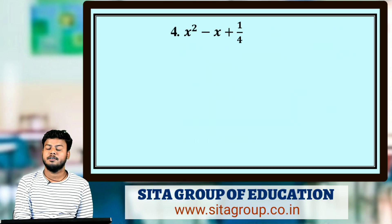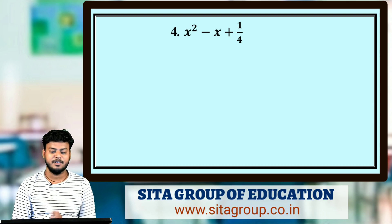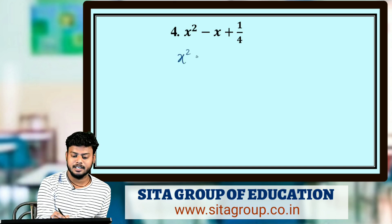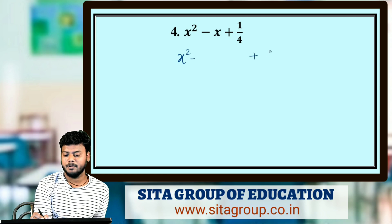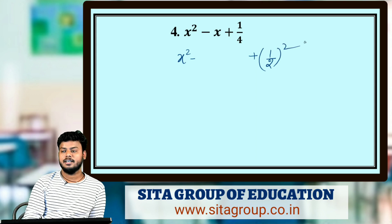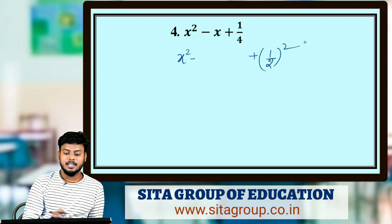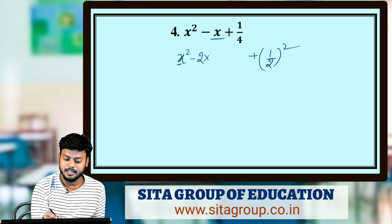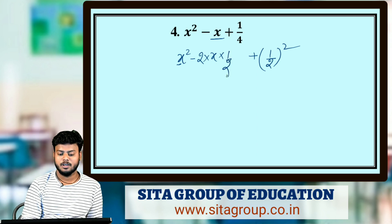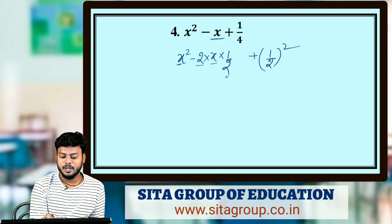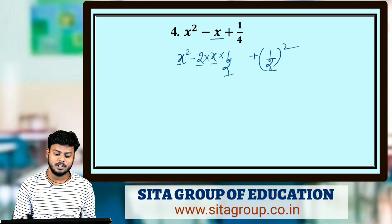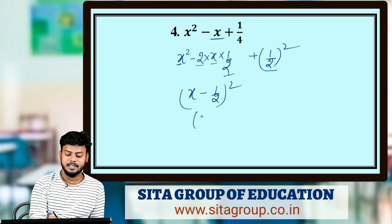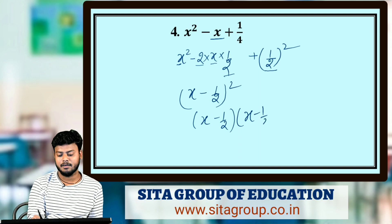Next question: factorize x² - x + 1/4. First, check for perfect squares: x² is a perfect square, and 1/4 can be written as (1/2)². Then check if x = 2ab: 2 × x × (1/2) = x. Yes, this matches a² - 2ab + b² = (a - b)². So with a = x and b = 1/2, the answer is (x - 1/2)², or (x - 1/2)(x - 1/2). This is your answer — very easy.